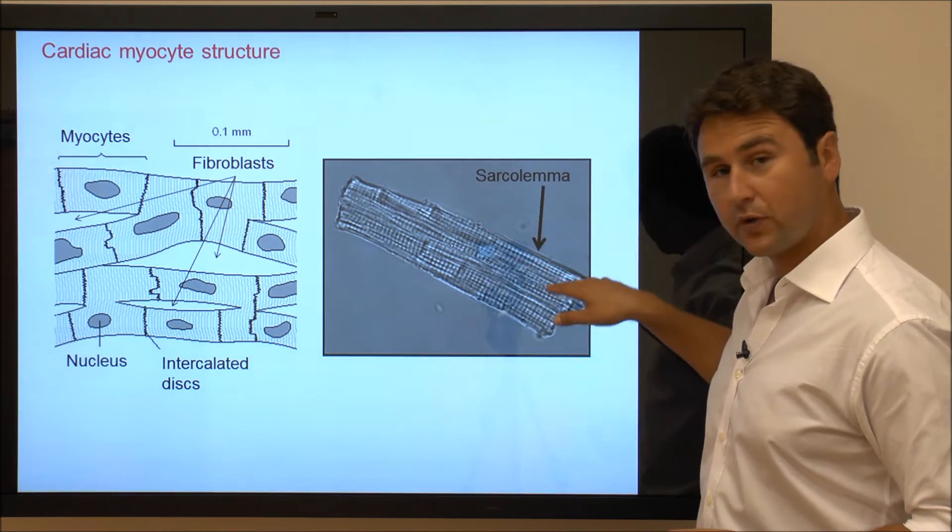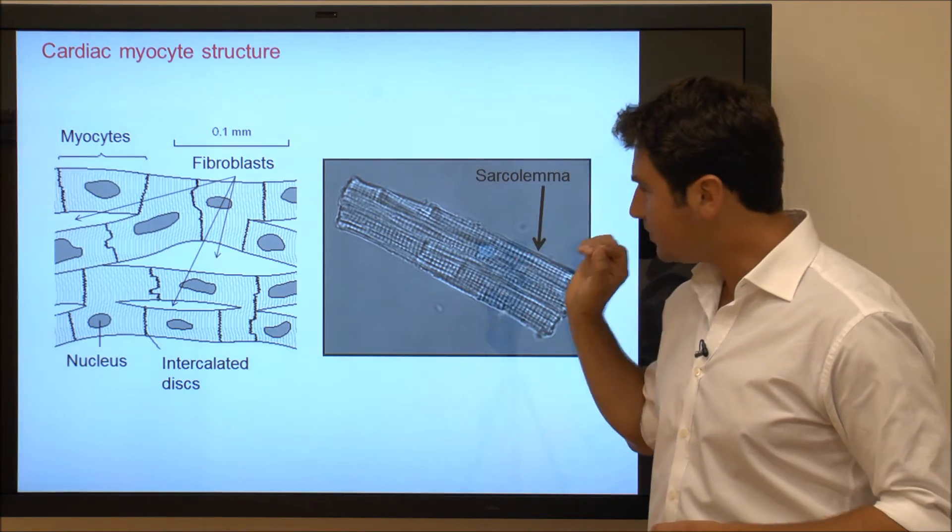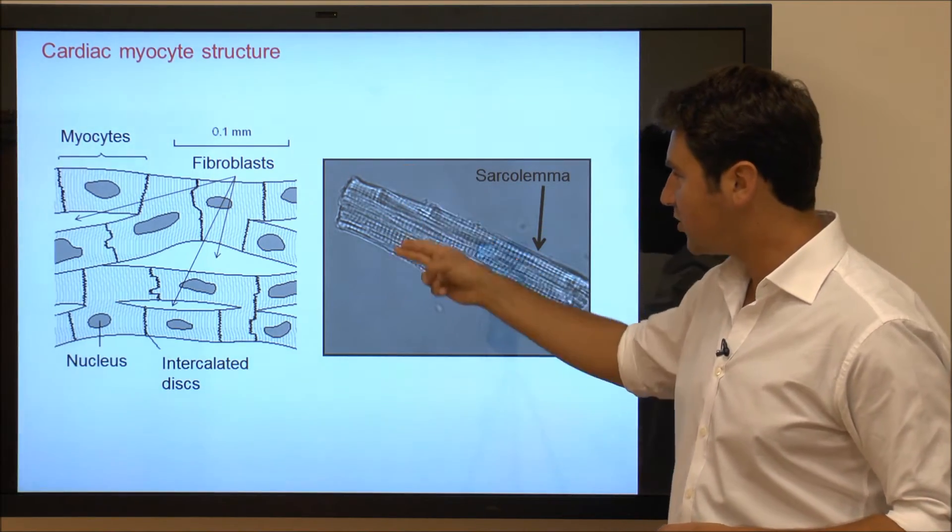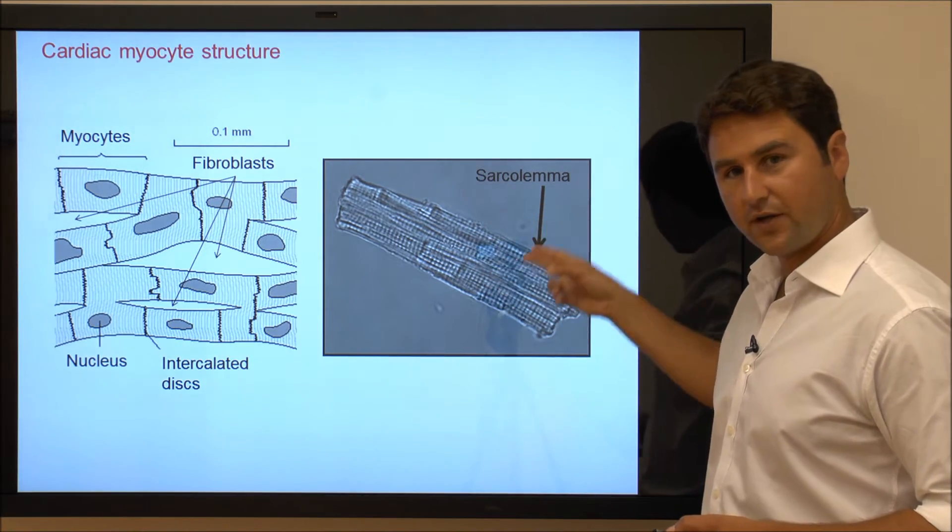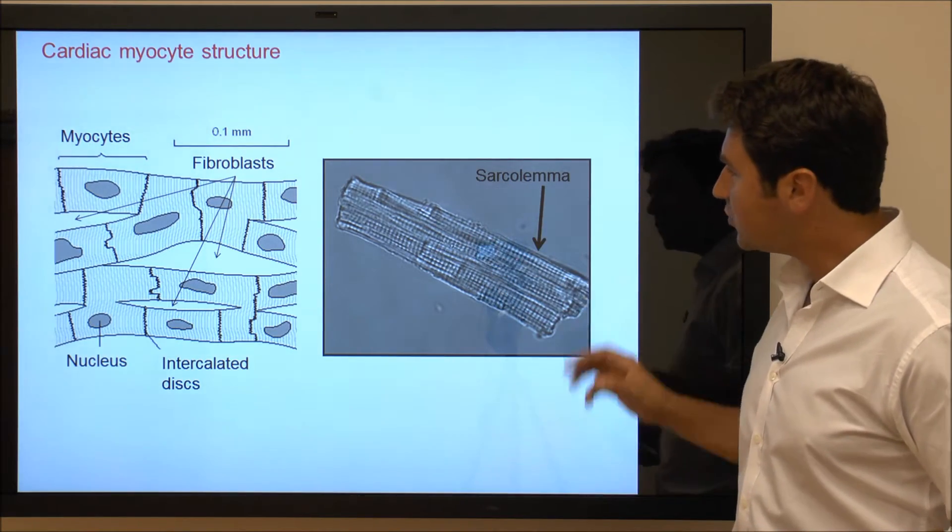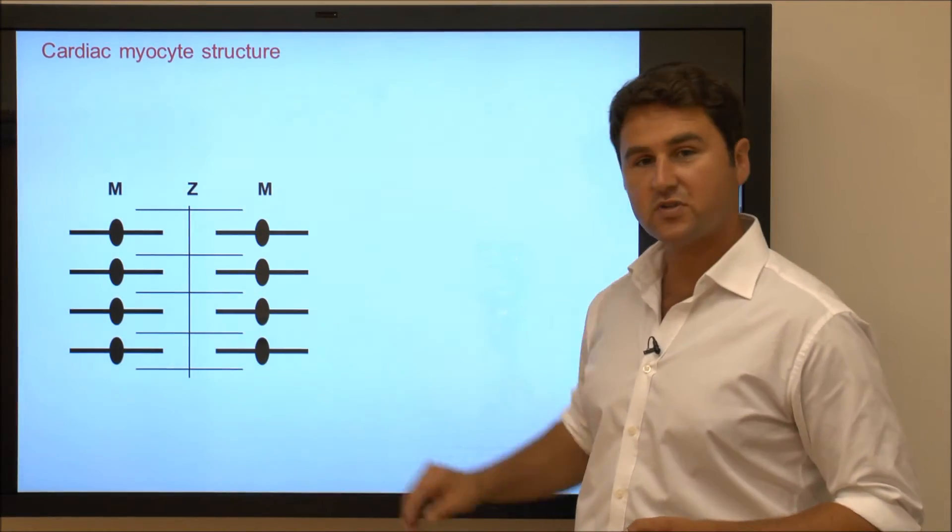It's surrounded by a membrane which we call sarcolemma, but what is immediately apparent are these striations that run at regular intervals through the cardiac myocyte. These are due to arrangement of myofilaments.